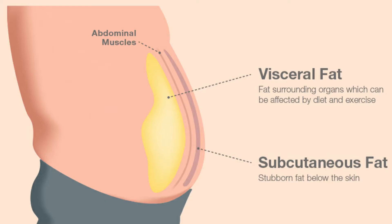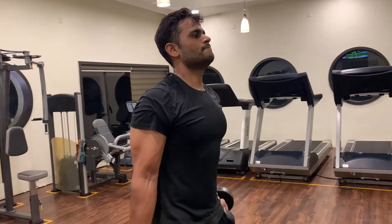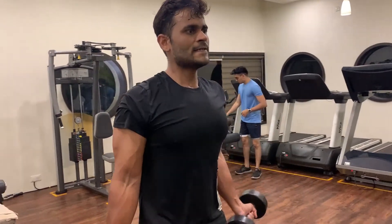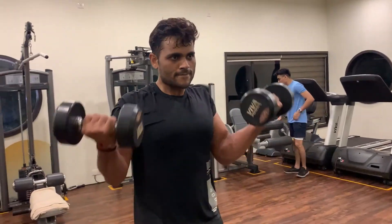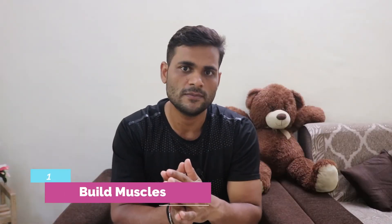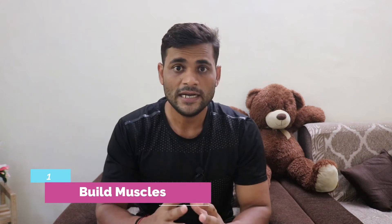Prominent veins are the result of low subcutaneous body fat percentage and high muscle mass. Now let's talk about how you can achieve vascularity, or popping out of your veins.